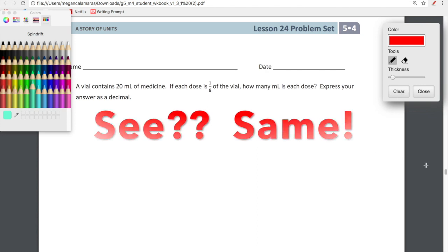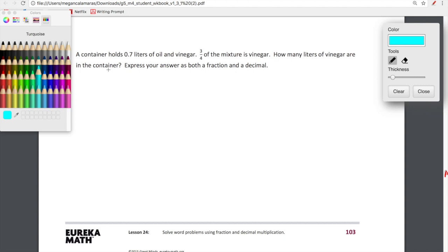A container holds 0.7 liters of oil and vinegar. Three-fourths of the mixture is vinegar. How many liters of vinegar are in the container? Express your answer as both a fraction and a decimal. So, first tape diagram. And since the denominator is four, that was horrible, we have to split it into four spaces. And then the total is 0.7 liters. And three-fourths of the mixture is vinegar. So, we're going to get three-fourths. That's vinegar.